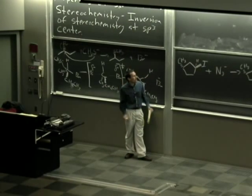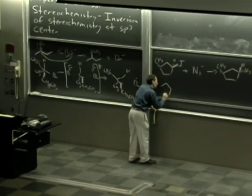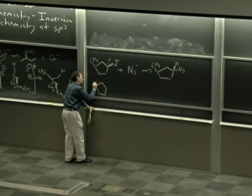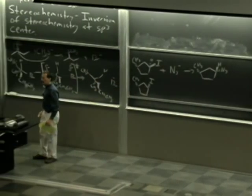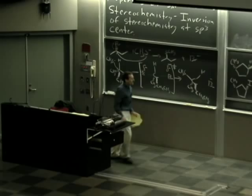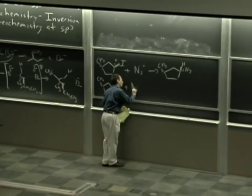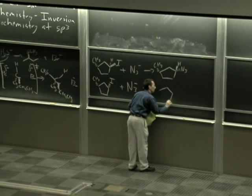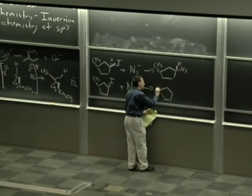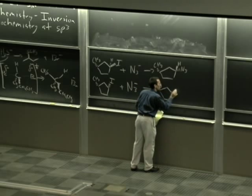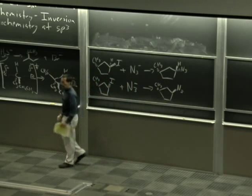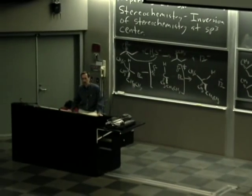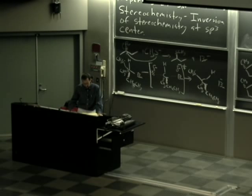By the time we've gone through the transition state, the azide is behind — very much the same inversion of stereochemistry we saw with the bromobutane example and in the animation. Conversely, if I start with the cis-stereoisomer in which the iodo group and the methyl group are on the same side of the ring and treat this with azide, now we're going to go to the trans-stereochemistry. Again, backside attack — inversion of stereochemistry.